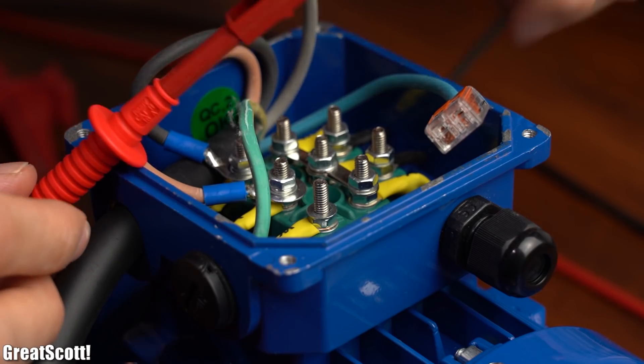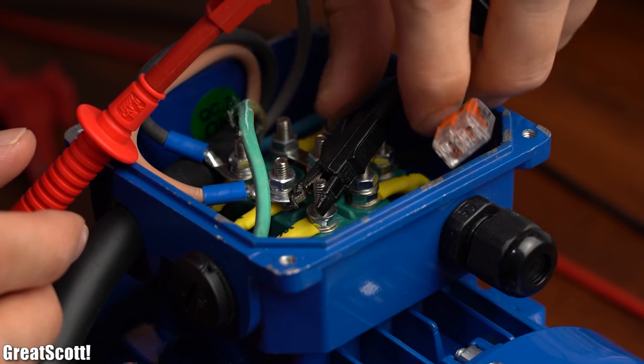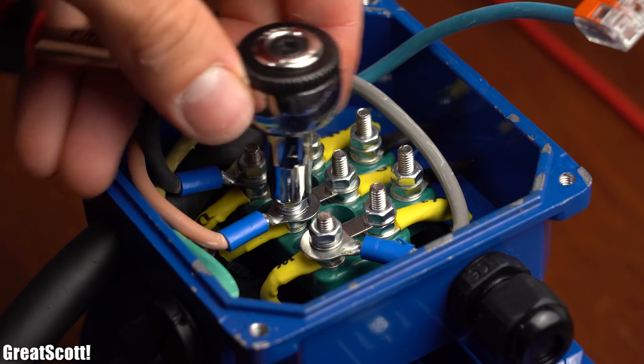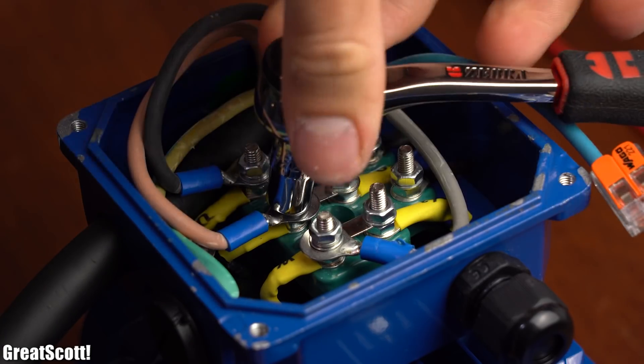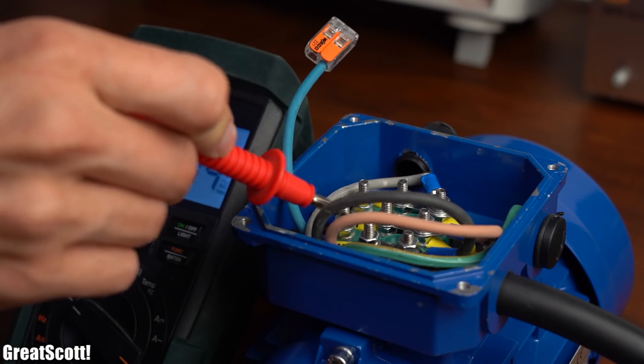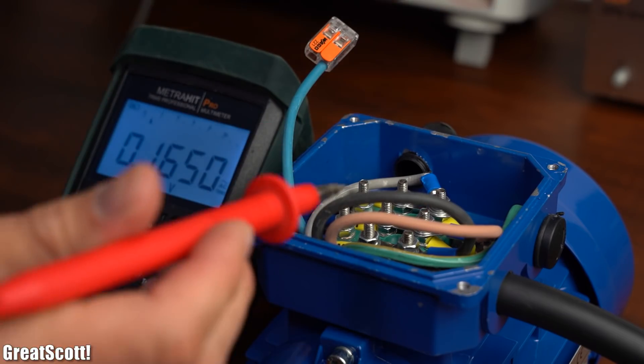As an experiment we can measure the current through one phase to see that it draws around 450mA. But if you would have wired up the motor incorrectly in the delta configuration then the current will multiply by almost 10 and the magic smoke will appear fairly quickly.